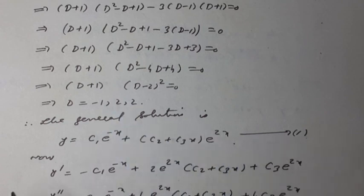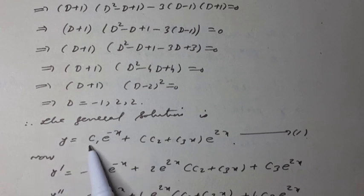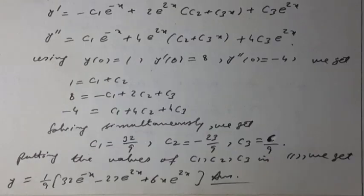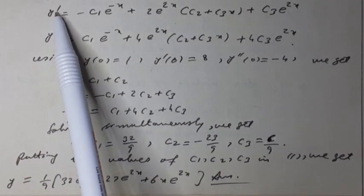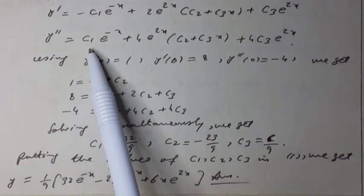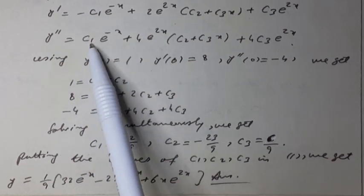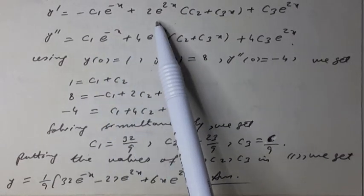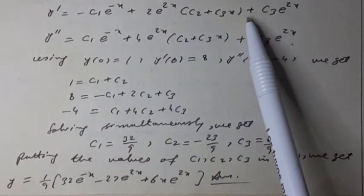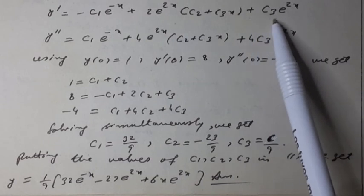Now, the first derivative equals -c₁e^(-x) plus the derivative of (c₂ + c₃x)e^(2x) using the product rule u·v. Again differentiating, y'' equals c₁e^(-x) plus the product rule differentiation of the remaining terms.